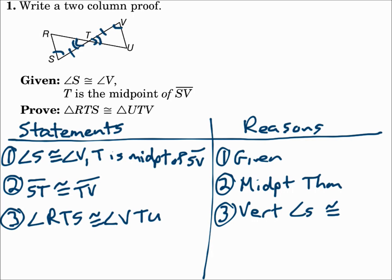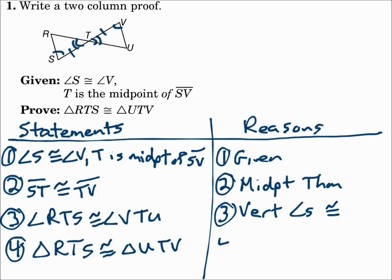So now we have a pair of angles, a pair of sides, and a pair of angles — that's enough. Triangle RTS is congruent to triangle UTV by angle-side-angle. You have an angle, the very next side, and the very next angle. So remember: start with what you're given, find the other pairs of congruent parts by looking for shared sides, vertical angles, midpoints, or alternate interior angles, then once you have enough pieces, say that the triangles are congruent.